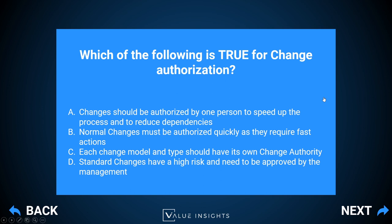Answer A — changes should be authorized by one person to speed up the process — is problematic because that person might lack technical knowledge, be on vacation, or be sick, halting the whole process. Answer B — normal changes must be authorized quickly as they require fast actions — is not true; that applies to emergency changes. Answer D — standard changes have a high risk and need management approval — is the opposite of correct: standard changes are low cost, low risk, pre-approved, like service requests that don't need individual approval each time. The correct answer is C.